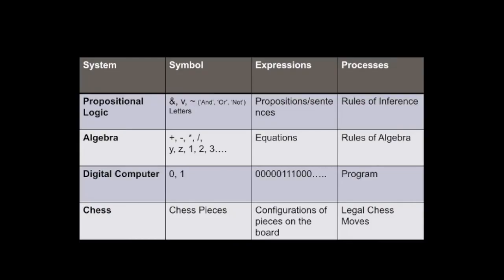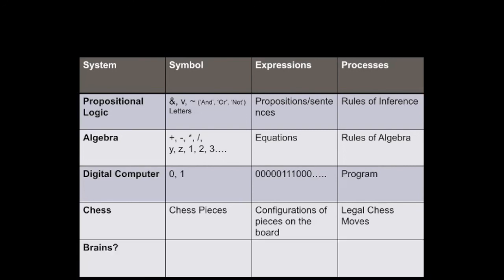You can have different kinds of physical symbol systems: propositional logic, algebra, digital computers, and chess. A research issue would be: if the brain, or part of the brain, is a physical symbol system, what are its symbols? What are its expressions, and what are its processes?